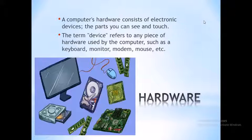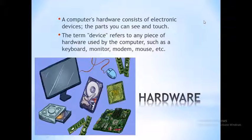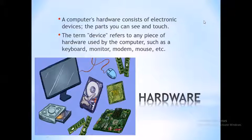The first topic is hardware. Computer hardware consists of electronic devices — the parts you can see and touch. The term device refers to any piece of hardware used by the computer, such as the keyboard, monitor, modem, mouse, etc. In the picture we have hardware including the monitor, hard disk, motherboard, mouse, and more.